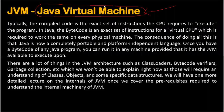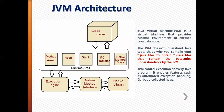Now we can see the JVM architecture. In the JVM architecture, you can see the following components: Class Loader, Method Area, Heap Area, Stack Area, PC Registers, Native Methods, and Execution Engine.